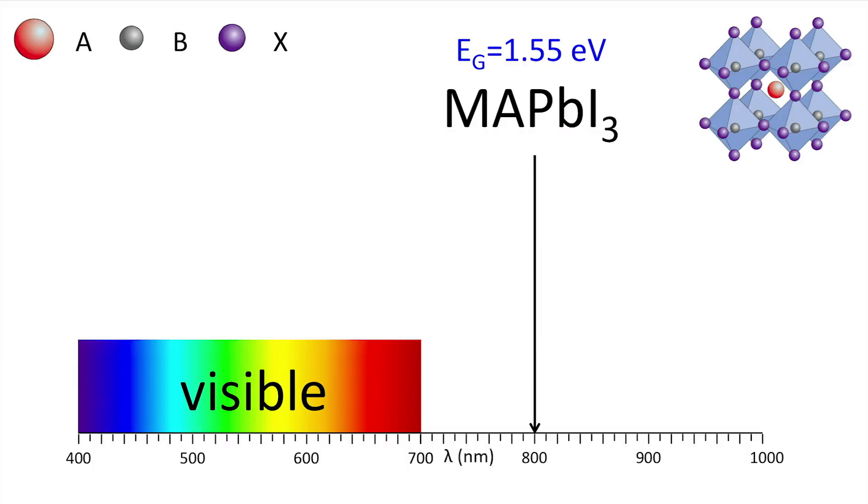The halogen anion X or iodine can for instance be replaced by bromine. The bandgap of methyl ammonium lead bromide shifts to higher energies up into the visible range.